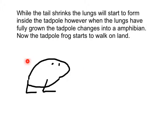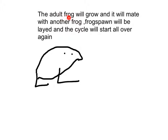Here is a tadpole frog, also known as a young frog. The adult frog will grow and it will mate with another frog. Frog spawn will be laid and the cycle will start all over again. Here is an adult frog.